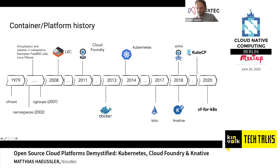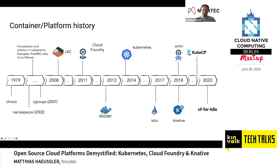Now let's go to the more technical things. Before going into the platforms, I want to talk briefly about how this all came together to the current state of the art. All the platforms in today's presentation — Kubernetes, Cloud Foundry, Knative — have container technology as a fundament, and not only the open source ones but also those provided by major cloud providers. Everything that runs cloud native applications normally has some container infrastructure layer underneath to distribute applications easily, scale them easily, and recover from failure easily.